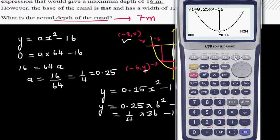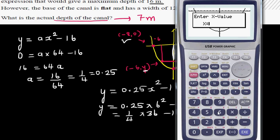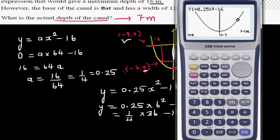And g-solve, and you want to calculate y when x is equal to 6 or negative 6, which is negative 7. So the actual height of the canal is 7 meters.